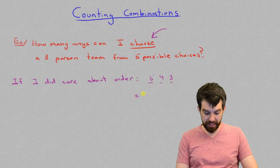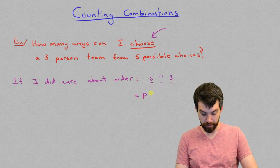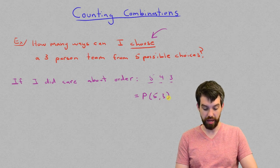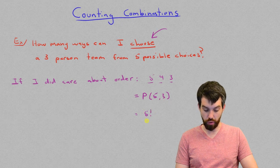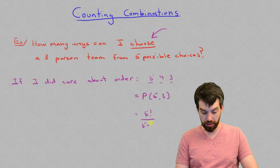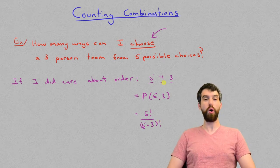And then we had seen that this particular expression, five times four times three, was going to be the same thing as if I picked, and we used a P to denote it, from five items a total of three items, and that this had the broader formula, the larger number factorial divided by n minus r, so in this case five minus three factorial, and that those were all going to be the same.